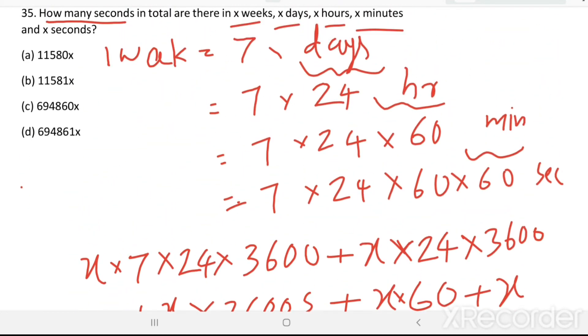So, see the options, only in two options we have one in the unit place digit, so we can eliminate these two options.